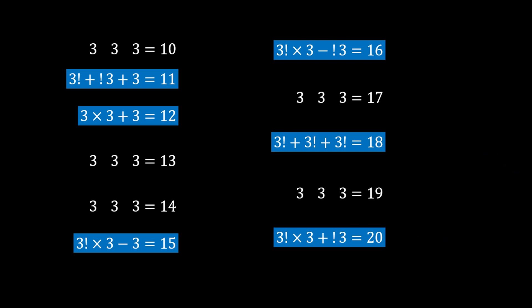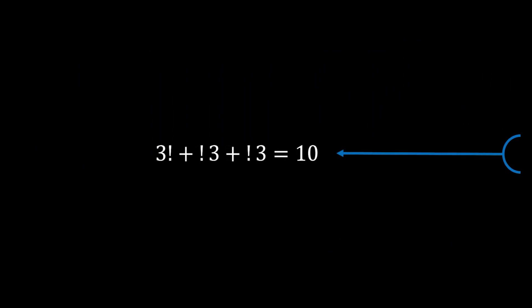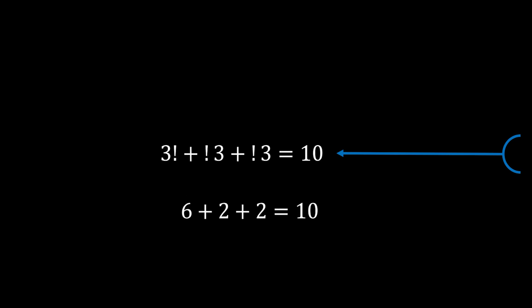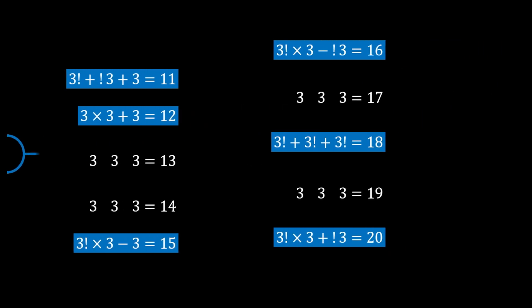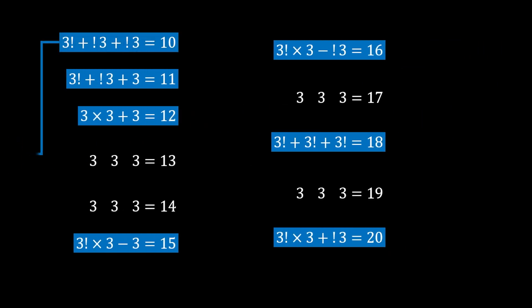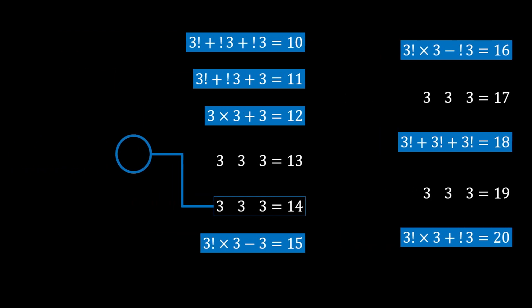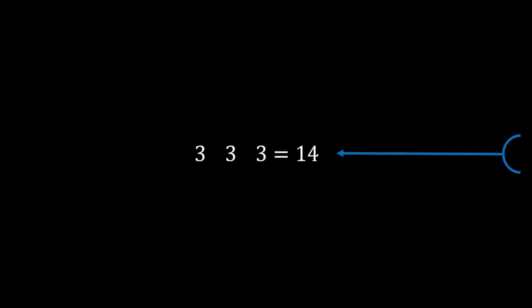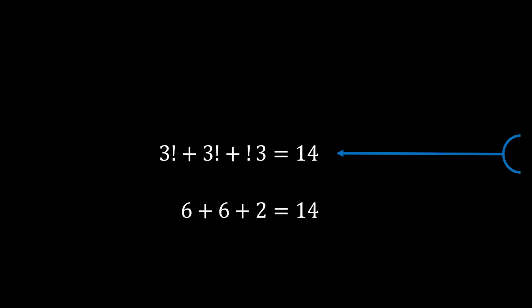For 10: 3! + !3 + !3 = 6 + 2 + 2 = 10. For 14: 3! + 3! + !3 = 6 + 6 + 2 = 14.